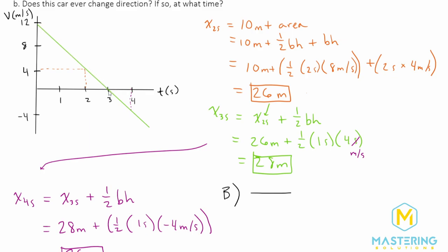Right at 3 seconds, there is no velocity. It's at 0. So it stops, and now we have a negative velocity. So it stops right here, and then it turns around and is going backwards. So the car does change direction, and it changes direction at a time of 3 seconds.